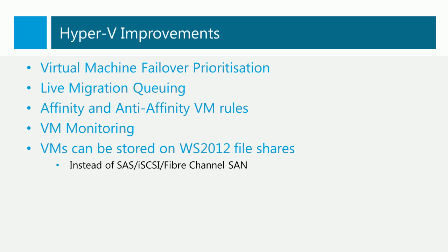There are a number of improvements in failover clustering for Hyper-V. Virtual machine failover prioritization allows us to order the failover of virtual machines whenever a node fails in the cluster. A virtual machine could have no failover priority, meaning it won't failover — appropriate for lab or test machines. It could have a high failover priority, meaning it would failover before other virtual machines. By default, all virtual machines have a medium failover priority, failing over after high priority machines. The final bucket is low failover priority, where those virtual machines wait for high and medium priority virtual machines to start first.